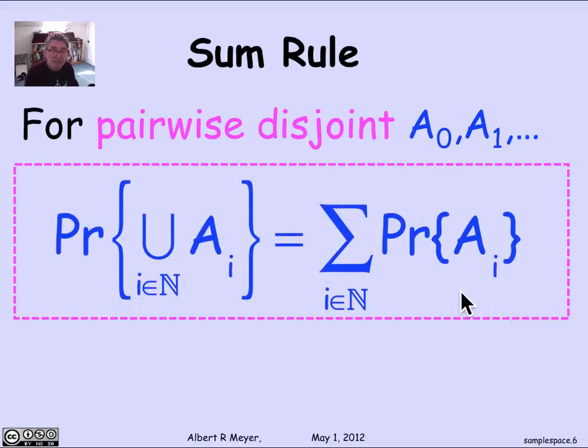Expressed in concise notation, the probability of the union of the A_i as i ranges over the non-negative integers is simply the sum of the individual probabilities of those events.